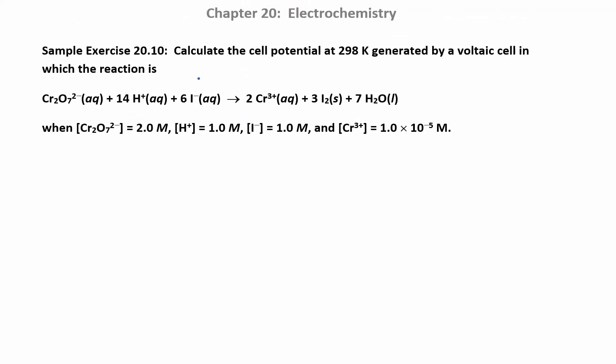Like in this next problem they say calculate the cell potential generated by a voltaic cell in which this is the reaction. And then they tell you these are the concentrations. This is not one, this one is one, this is one, this is not one. So not everybody's under standard conditions. We're going to have to calculate a Q based on this reaction. And remember when you calculate a Q you don't have to worry about solids or liquids. Solids and liquids didn't go in the equilibrium constant expression, they're not going to go in your Q expression either.